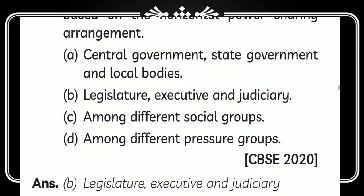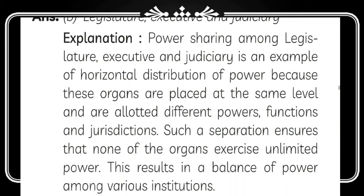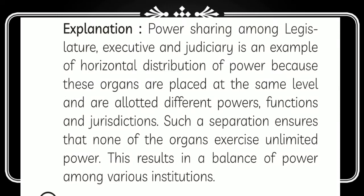You all know what horizontal means. The answer is legislature, executive, and judiciary — because when you write legislature, executive, and judiciary they are written in a horizontal manner, while central government, state government, and local bodies are written vertically. Power sharing among the legislature, executive, and judiciary is an example of horizontal distribution of power because these organs are placed at the same level with different powers, functions, and jurisdictions. This separation ensures none of the organs exercise unlimited power, resulting in a balance of power.